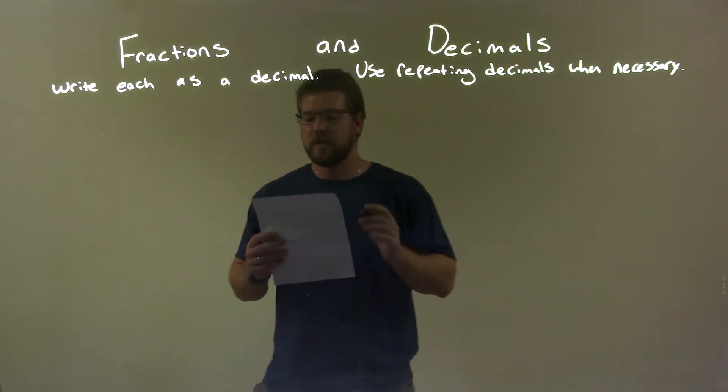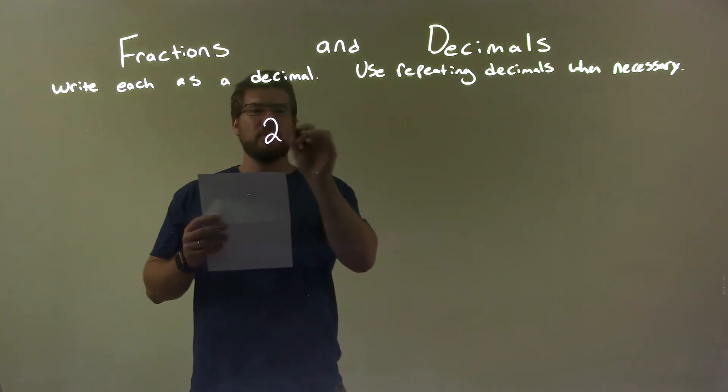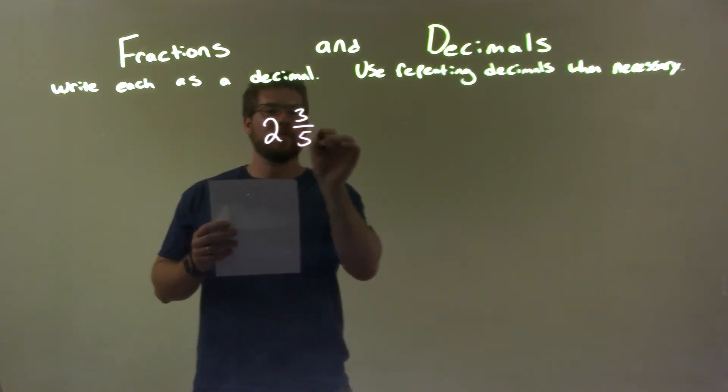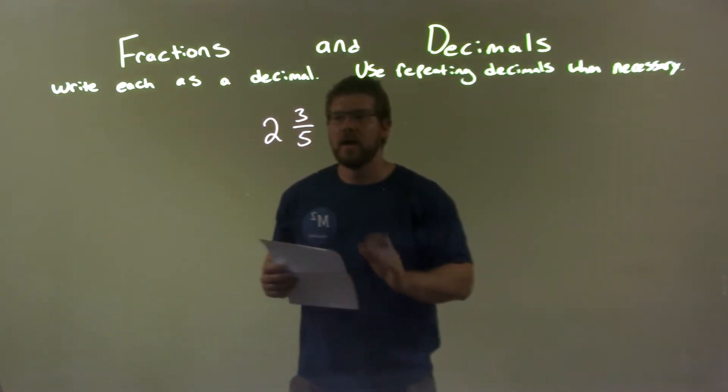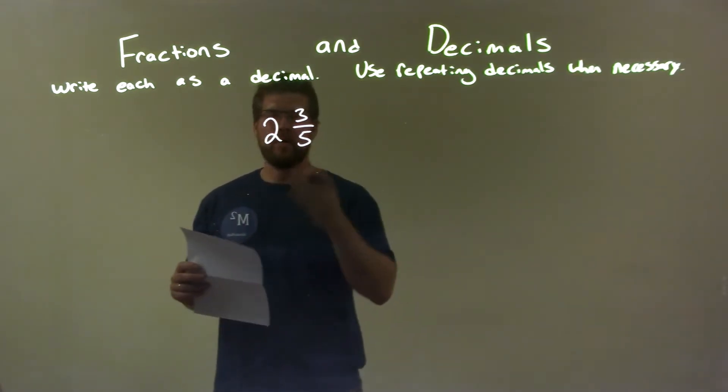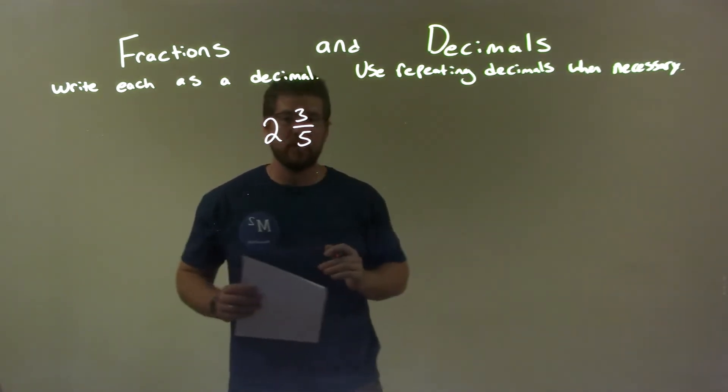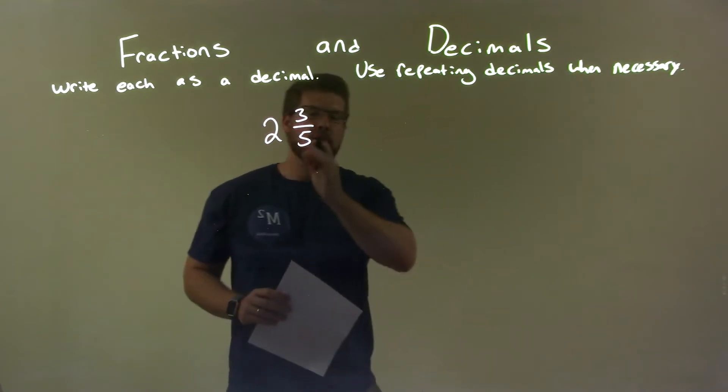So if I was given this fraction, 2 and 3 fifths. Well, one thing I know is 2 and 3 fifths, so 2 is going to be the beginning part and I want the decimal part, which is the 3 fifths. So I'm going to use long division to get there.